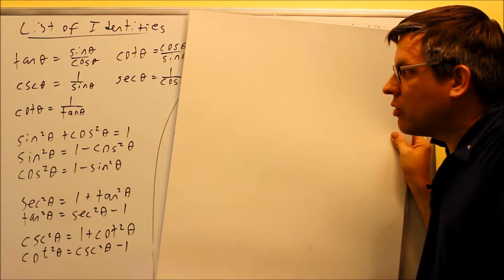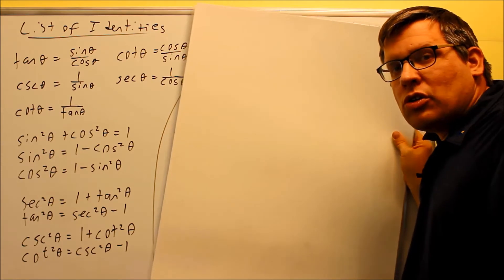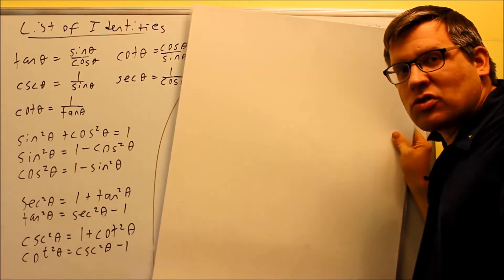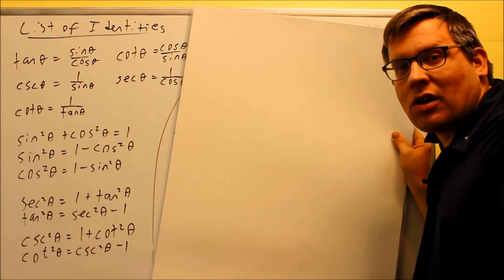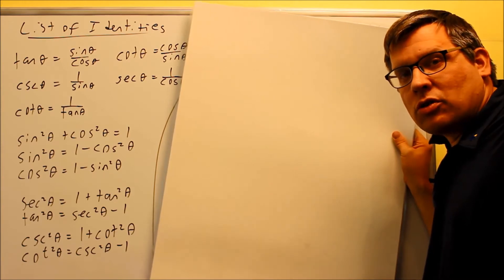So first, we have to really understand these lists of identities because you're going to be referring back to them when you do problems in this section. You want to make sure you have this list with you, at least when you first attempt the homework, because you will be referring back to them a lot, and we will do that also with these problems that we're going to show.